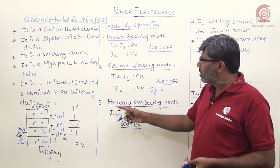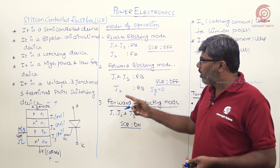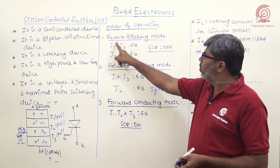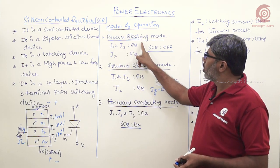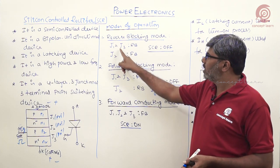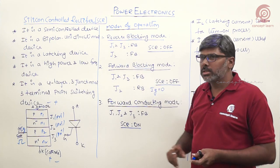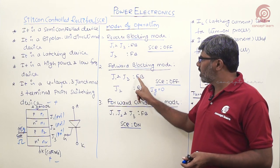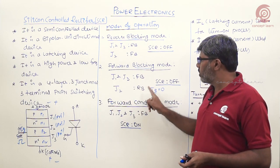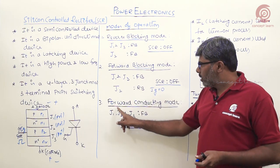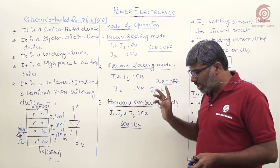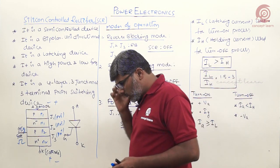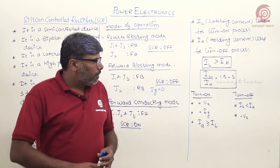To summarize the three modes: in reverse blocking mode, J1 and J3 are reverse biased and J2 is forward biased — SCR is off. In forward blocking mode, J1 and J3 are forward biased and J2 is reverse biased — SCR is still off. In forward conducting mode, all junctions are forward biased and SCR is in the on state.